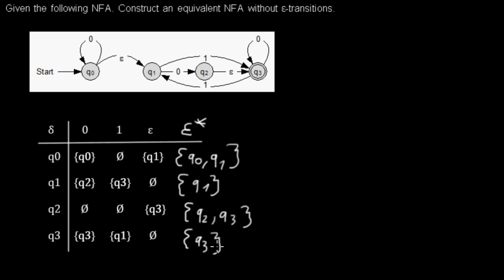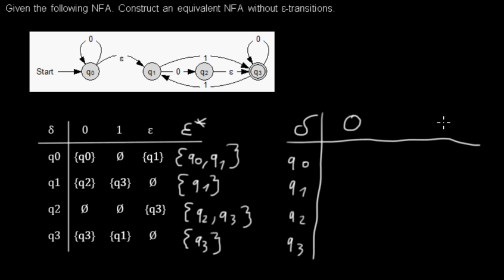So now in the second step, I have to merge all the sets that are in the same column that belong to the epsilon closure. So I draw a new table with Q0, Q1, Q2, Q3, and with the transition symbols 0 and 1 in this case, but no epsilon anymore because we are erasing them.